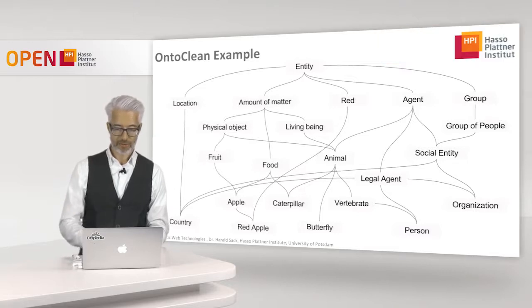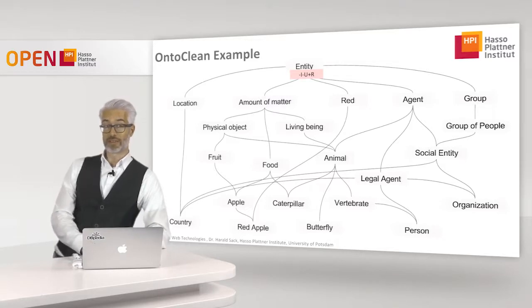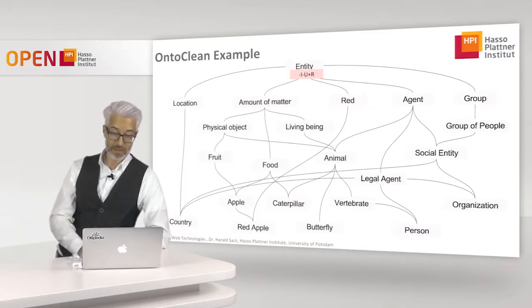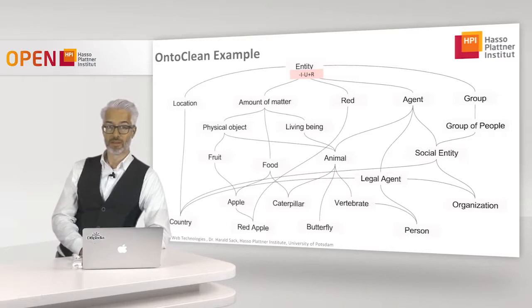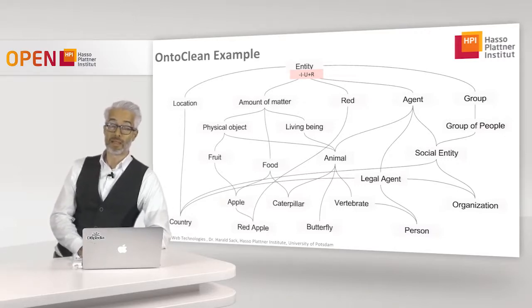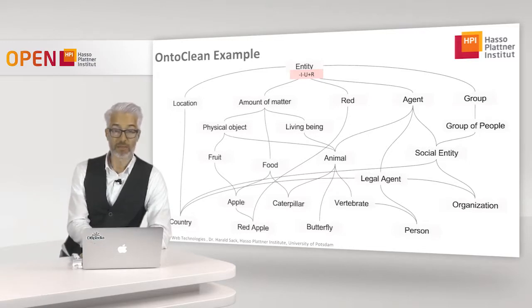Starting with 'entity': it can be almost everything, so there is no common identity criterion — minus I. The same applies to unity: there is no common unity criterion for entity — minus U. But it is rigid, because if an entity ceases to exist, it is no longer an entity. So entity gets: minus I, minus U, plus R.